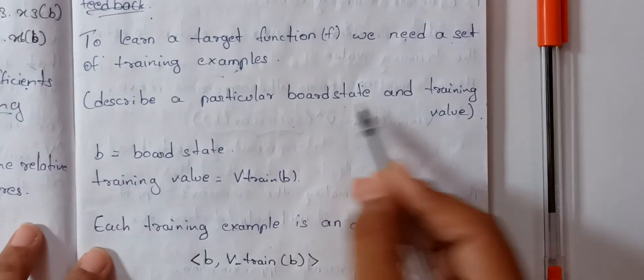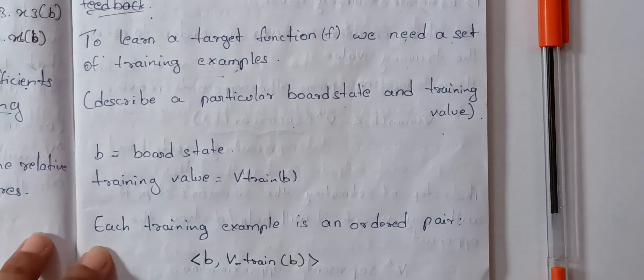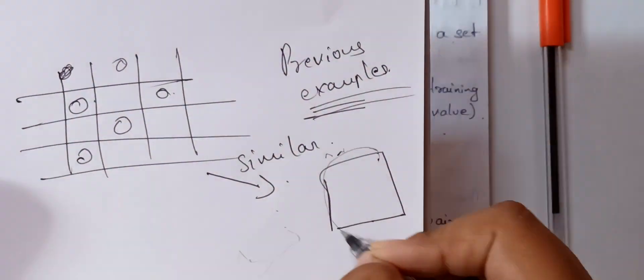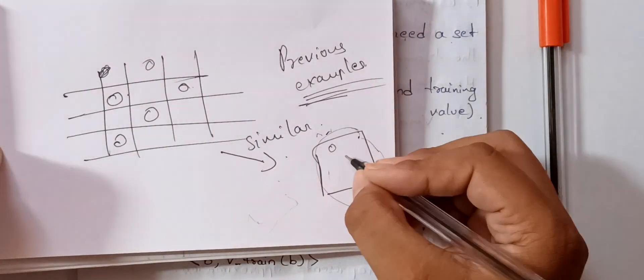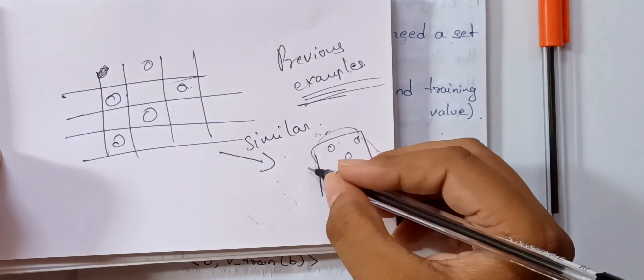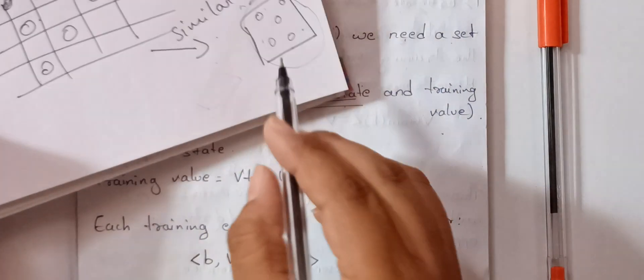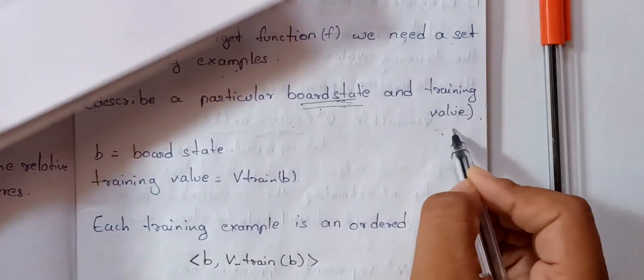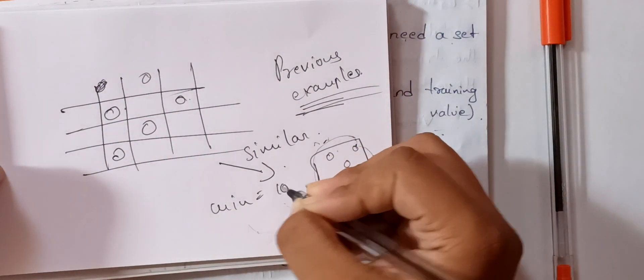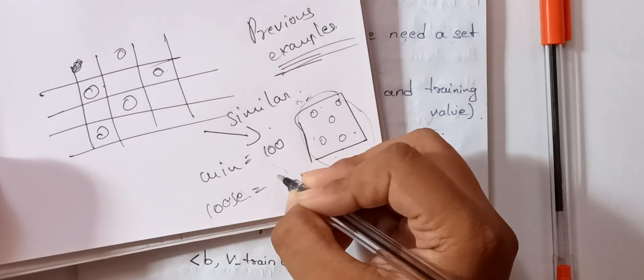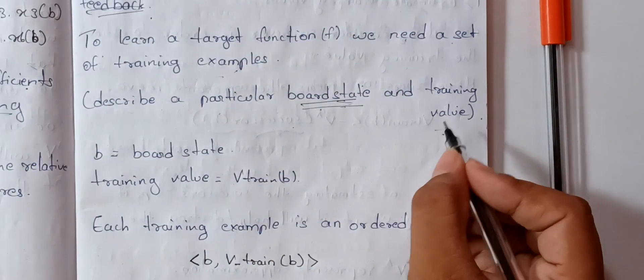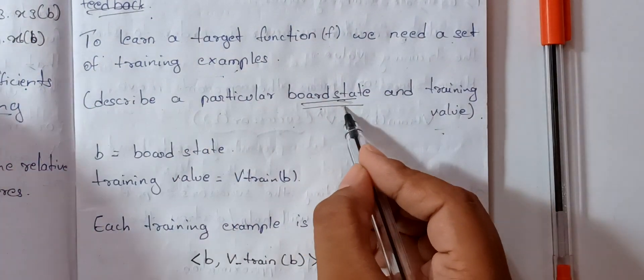Training examples describe a particular board state and a training value. We will show the board state with its pieces — this is whether it is a winning state or a losing state. This is related information. The training value: if it is winning, it will be 100; if you lose, it will be minus 100.